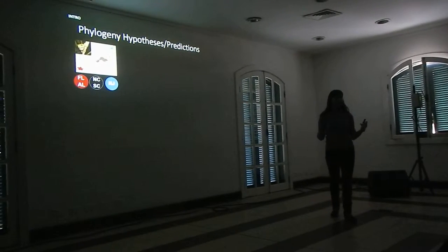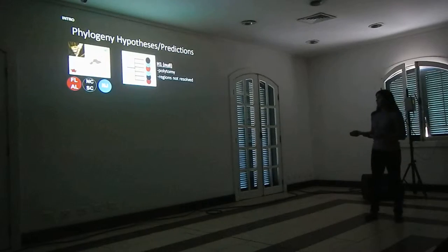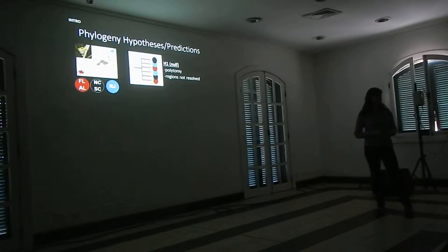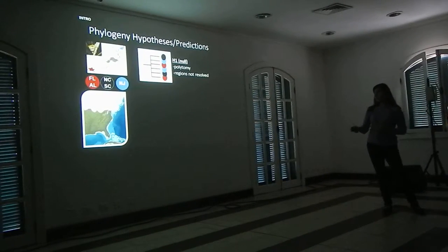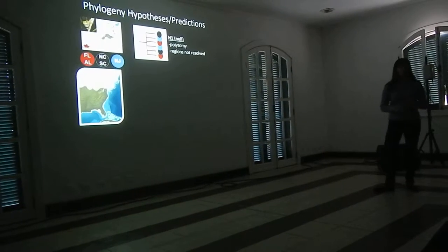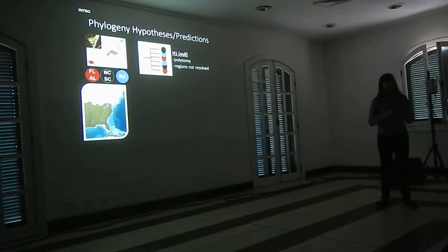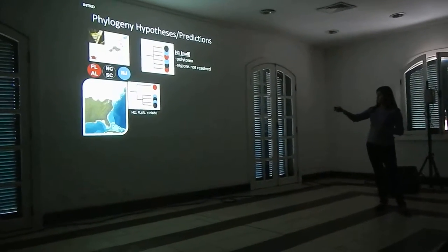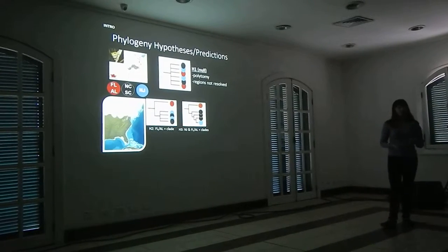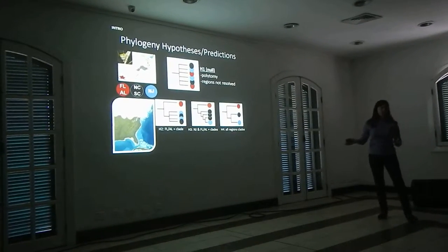Before getting too far into the methods, I want to point out what we might expect to see in the phylogeny for this species. The null hypothesis would be a polytomy with no resolution among the three regions — probably unexpected given the microsatellite data. More likely, given glacial history, we'd expect Florida and Alabama to be sister to more recently expanded regions like New Jersey and the Carolinas, or New Jersey could form its own clade with a ladder-like pattern in the Carolinas, or all three regions could be completely resolved in the phylogeny.